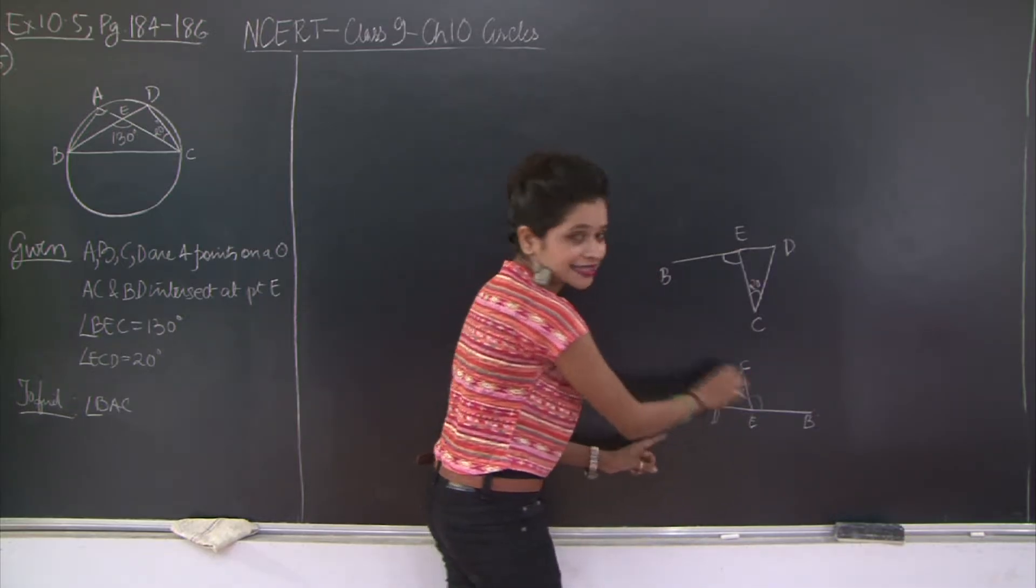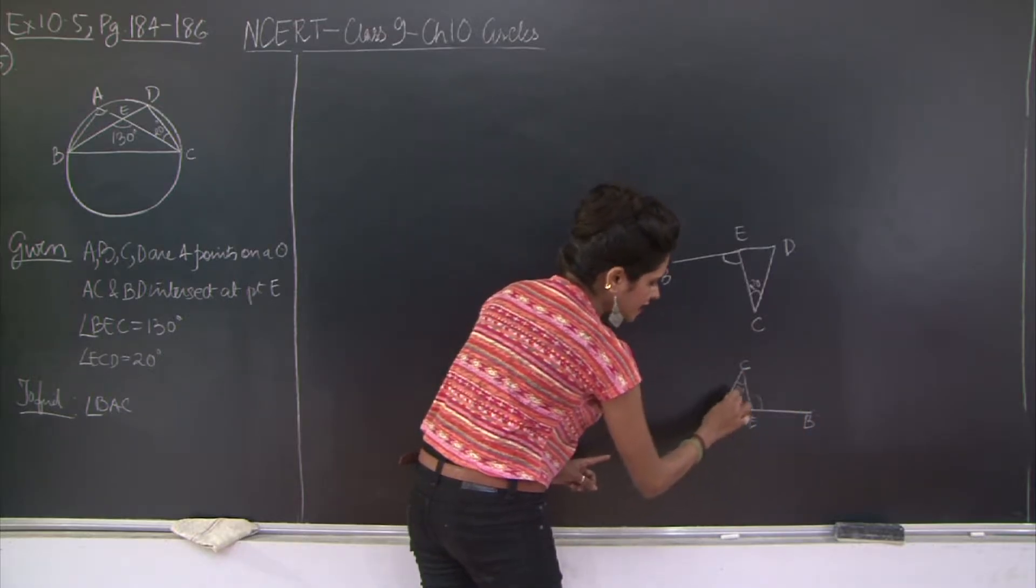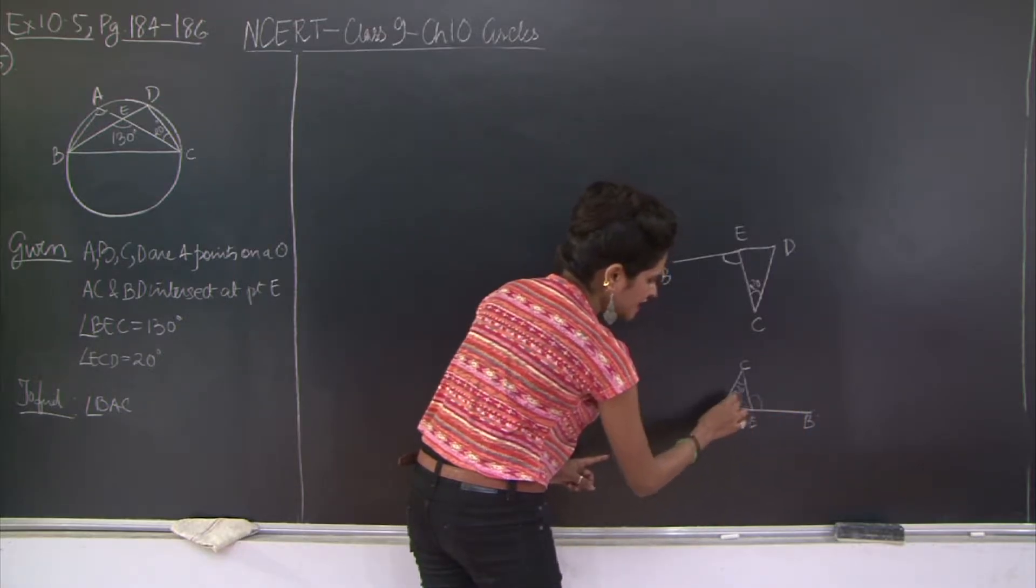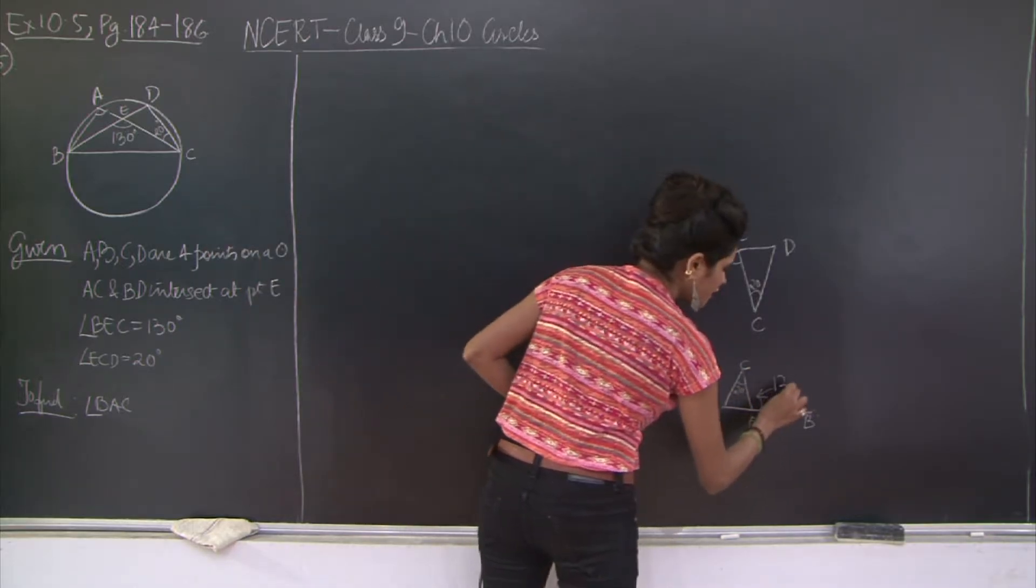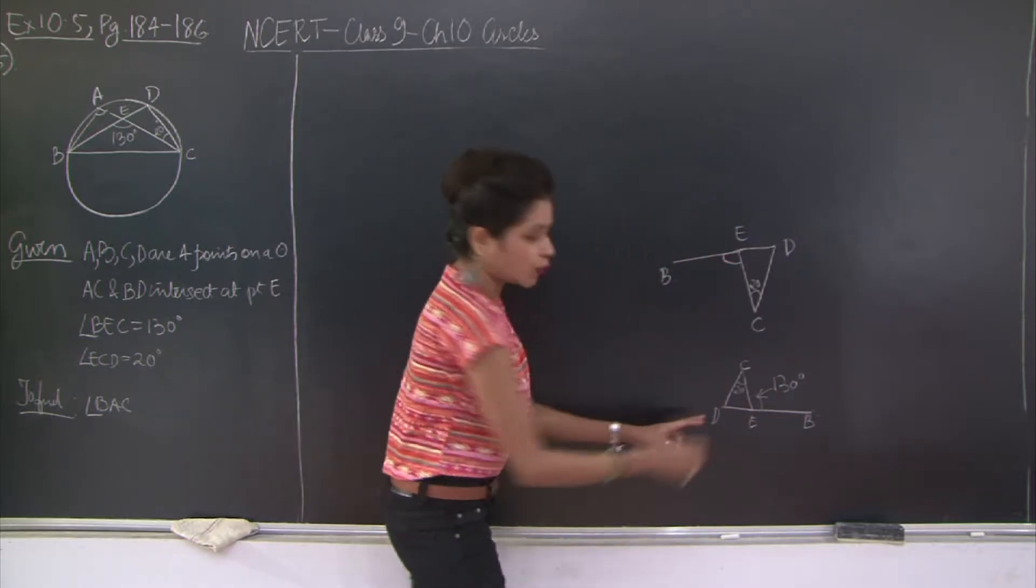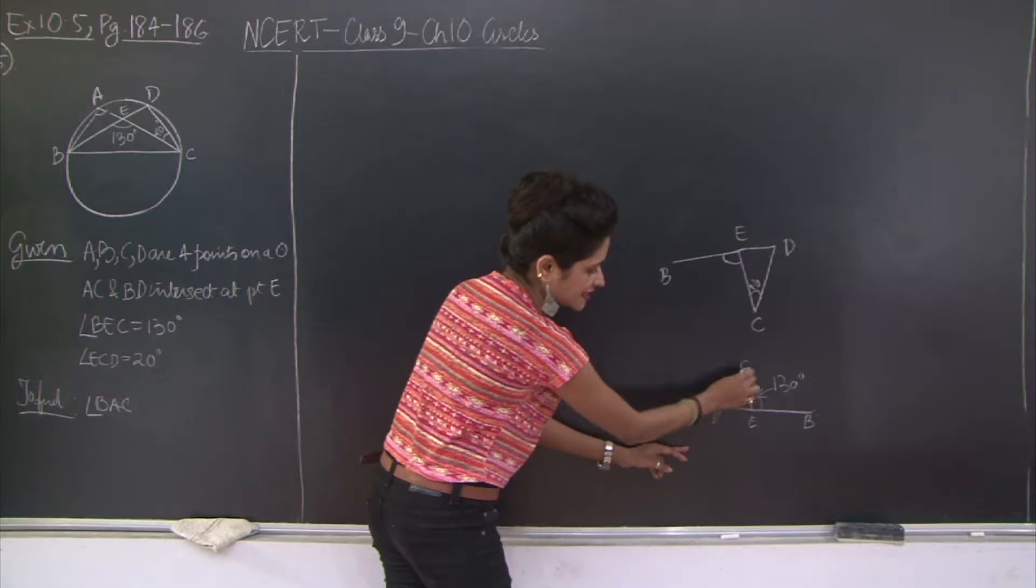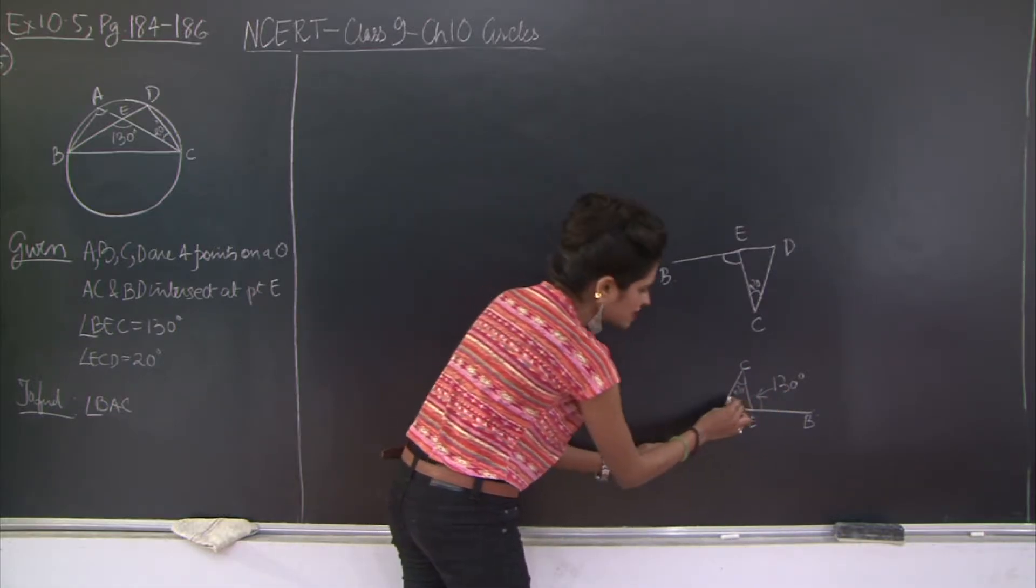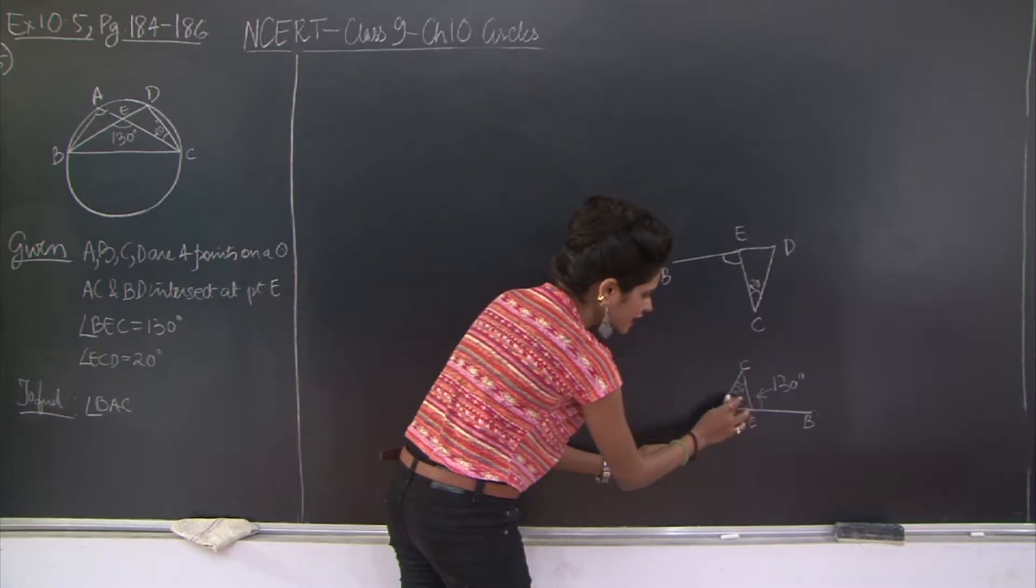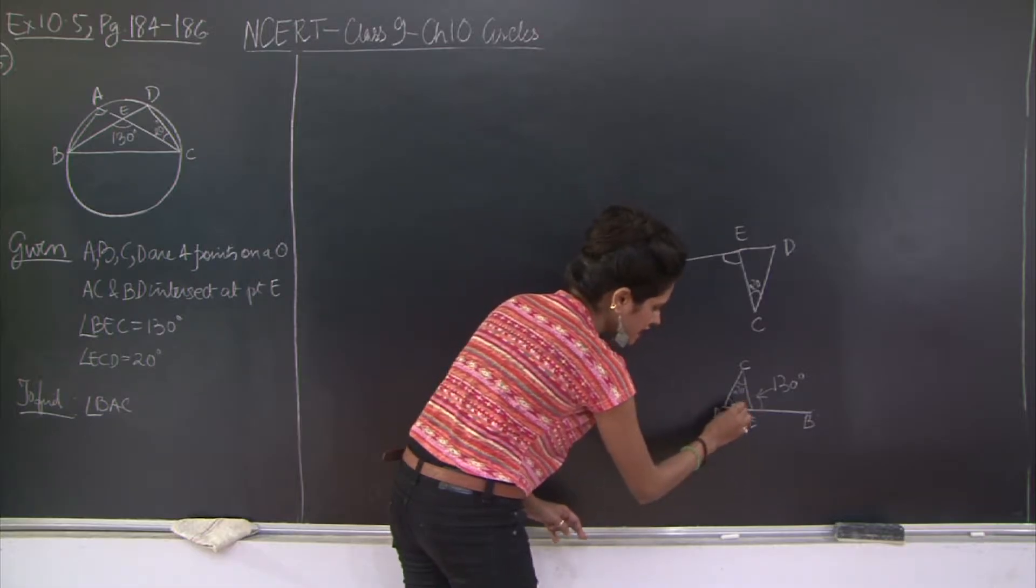Therefore angle CEB is the sum of interior opposite angles of triangle CDE. So angle CEB is angle DCE plus angle EDC. Now this is given to be how much? It's been given as 130 degrees. So 130 is 20 plus X. Therefore X is CDE. Therefore 130 minus 20 will give you X.